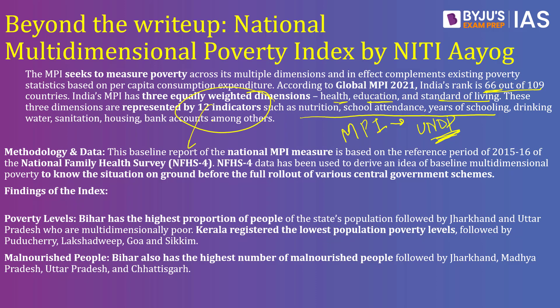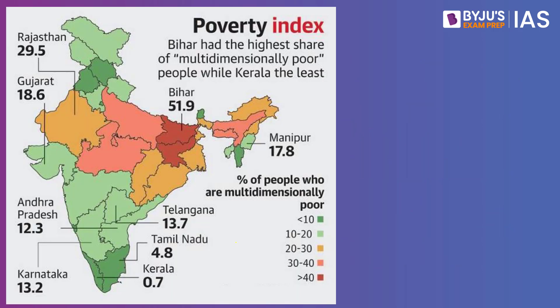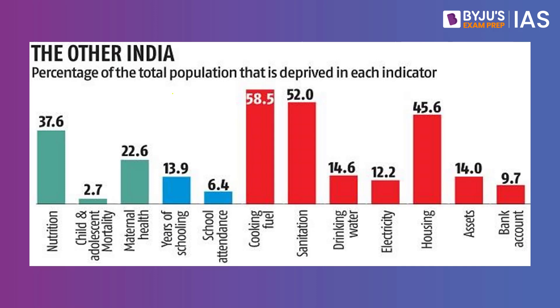Some highlights of the report are that Bihar has the highest proportion of people under poverty, followed by Jharkhand and UP. Kerala registered the lowest poverty levels. In terms of malnourishment, Bihar was again at the very top. As you can see here, 51.9% of people in Bihar were considered multi-dimensionally poor, while Kerala performed the best. This is the gist of the National MPI report published by the NITI Aayog.